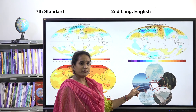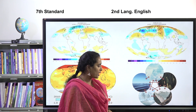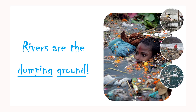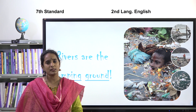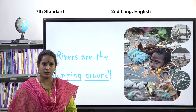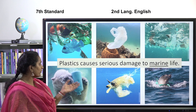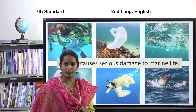The end result will affect the water we use, the air we breathe, all the trees and plants around us, the mountains and the glaciers. Rivers have become the dumping ground — all the plastic that we use, we just throw it away and it gets dumped in the river. Due to that, the marine life is affected. Plastic causes serious damage to marine life.